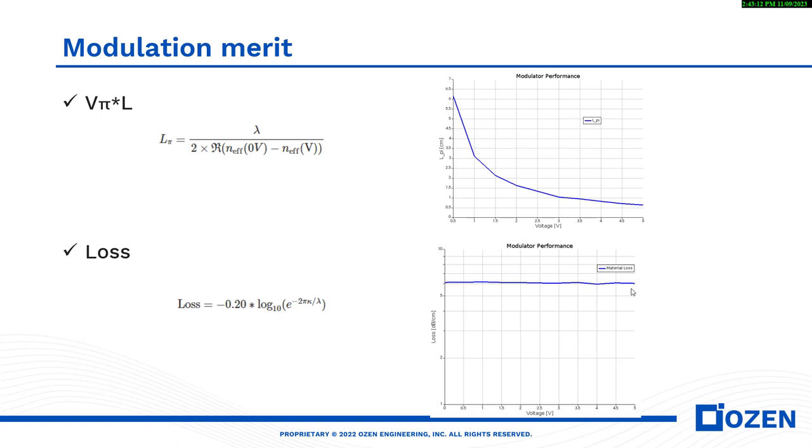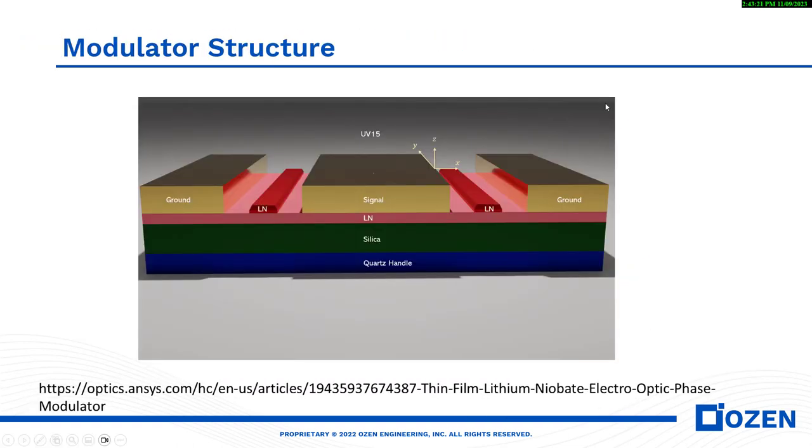This is a simpler structure for the lithium niobate modulator. But you can design more complicated structures, like photonic crystal structure, like Bragg grating structure, like you can use a slot waveguide, you can use other parameters, you can integrate this lithium niobate with silicon. I already published a knowledge base article at the Ozen website. I discussed more detail about these things. And also, I showed two case studies for the lithium niobate modulator and why we need to have lithium niobate. For more detail, please visit our website and our knowledge base article.